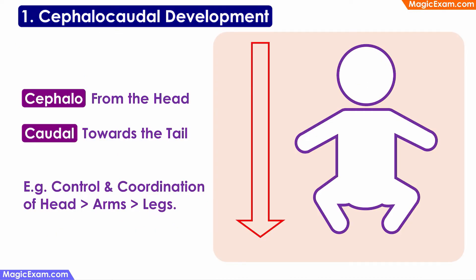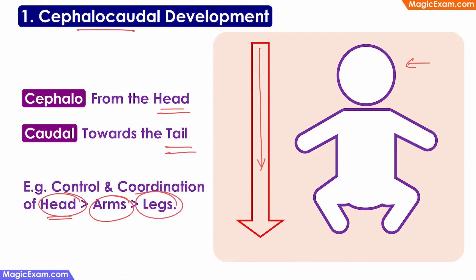The first important principle of development is cephalocaudal development. Cephalo means head and caudal means tail. This principle says that development of the baby starts from the head and moves towards the tail. This is scientifically proven — the brain is one of the first parts of the body to develop and the limbs develop later. Even after birth, the child will first learn to control the head, turning it towards sounds or objects, then will learn to control the arms, and then the legs. So development starts from the top and moves towards the bottom. That is cephalocaudal development.